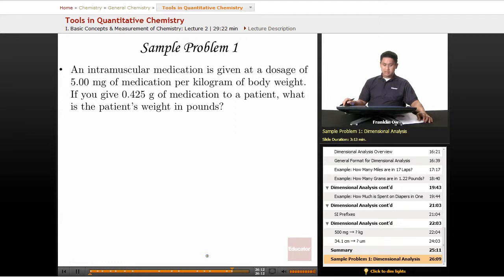Intramuscular medication is given at a dosage of 5.00 milligrams per kilogram of body weight. If you give 0.425 grams of medication to a patient, what is the patient's weight in pounds?